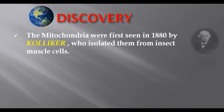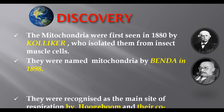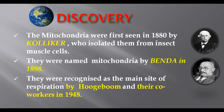We want to talk about mitochondria. In 1880, mitochondria were first seen and isolated from insect muscle cells. Mitochondria have been isolated in 1898. In 1948, mitochondria were recognized as the main site of respiration by their co-workers. That is all about the discovery of mitochondria.